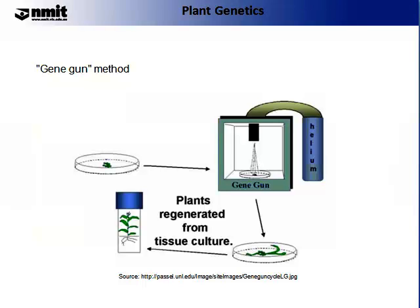In the Petri dish, we have some plant cells. In the vacuum chamber, we place the Petri dish, and this allows us, using helium, to shoot the DNA that's suspended on the gold coating. The gold coating acts as a carrier, and the gene then goes into the plant tissues. As the plant grows and cells reproduce, these characteristics or traits are produced into the new plant. The new plant is then transferred from tissue culture into a pot environment, where it's grown up and its seeds can be collected or it can be propagated.